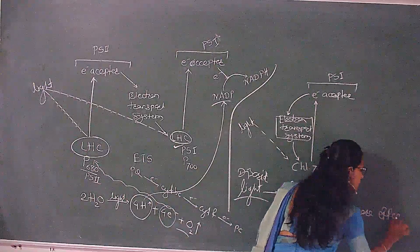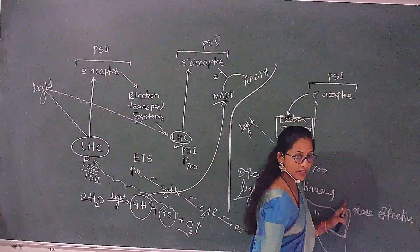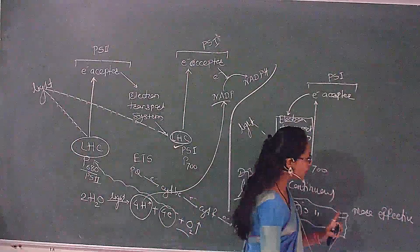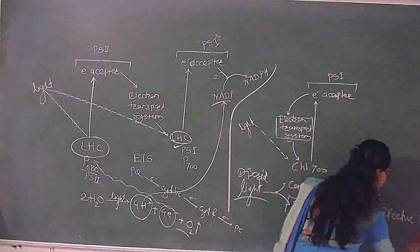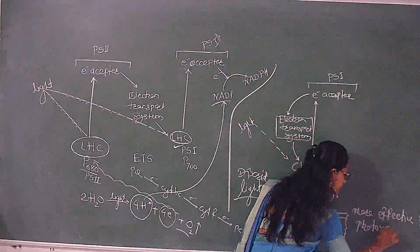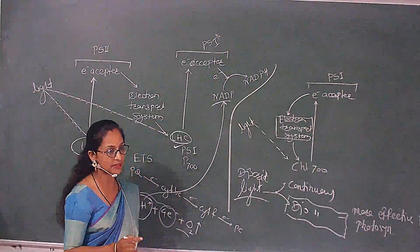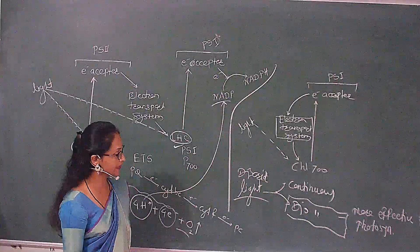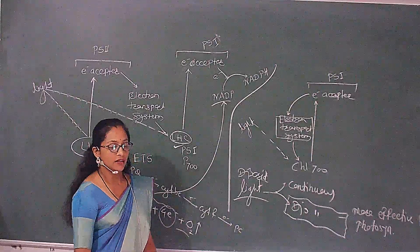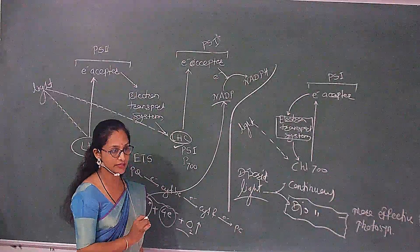Continuous light will also produce photosynthesis, but comparatively discontinuous light is more effective for photosynthesis. The reason will be explained in the context of interdependence of light and dark reactions — just note it down for now.